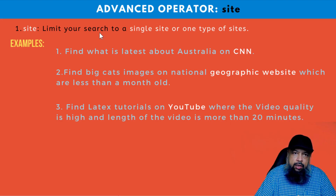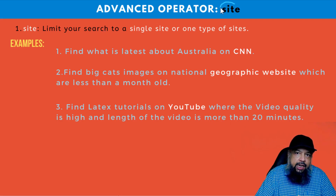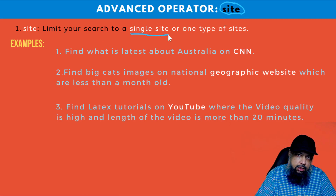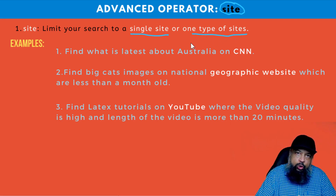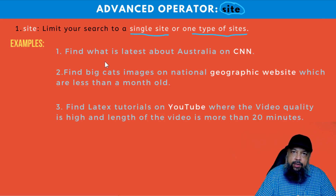In this video, we will learn an advanced Google search operator, which is 'site'. You use the site operator when you are concerned only about a single site or one type of websites. I have written here three different scenarios, which I will demonstrate in Google.